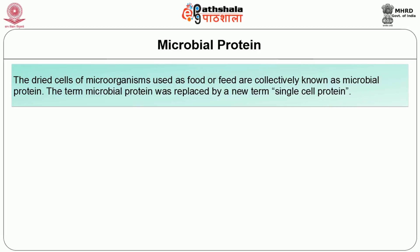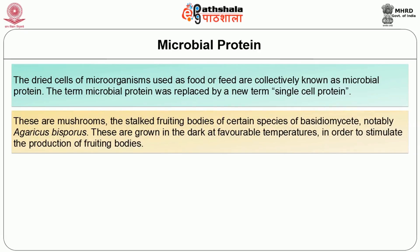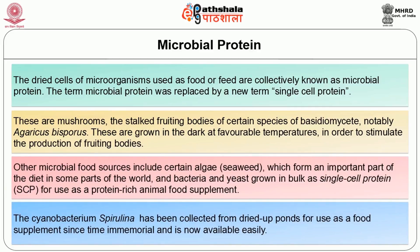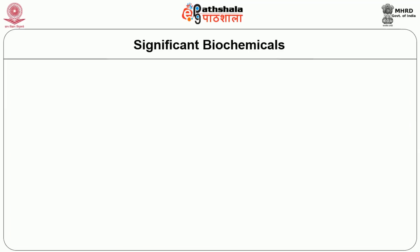The term microbial protein was replaced by the new term single cell protein. Mushrooms are the stalked fruiting bodies of certain species of Basidiomycetes, notably Agaricus bisporus. These are grown in the dark at favorable temperatures in order to stimulate the production of fruiting bodies. Other microbial food sources include certain algae — seaweed — which form an important part of the diet in some parts of the world, and bacteria and yeast grown in bulk as single cell protein for use as a protein-rich animal food supplement. The cyanobacterium Spirulina has been collected from dried-up ponds for use as a food supplement since time immemorial and is now easily available.